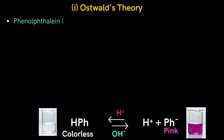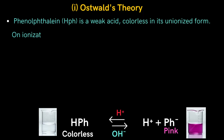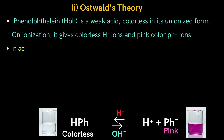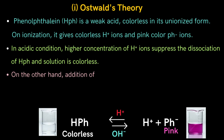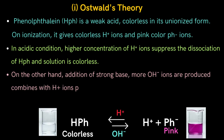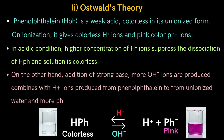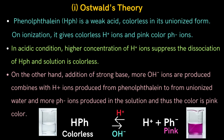Ostwald's theory explains the color change as follows: Phenolphthalein, abbreviated as HPH, is a weak acid, colorless in its un-ionized form. On ionization, it gives colorless H+ ions and pink-colored PH⁻ ions. In acidic conditions, higher concentration of hydrogen ions suppresses the dissociation of HPH and the solution is colorless. On the other hand, addition of a strong base produces more hydroxyl ions which combine with hydrogen ions from phenolphthalein to form un-ionized water, producing more PH⁻ ions and thus a pink color.